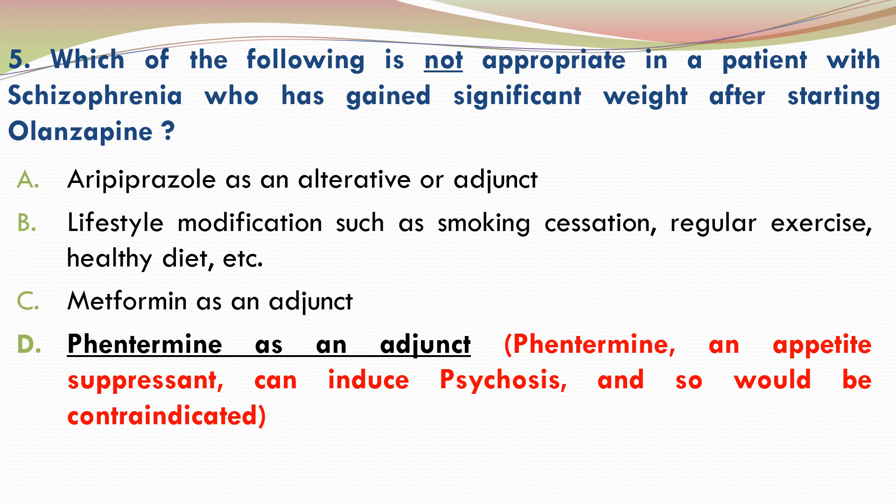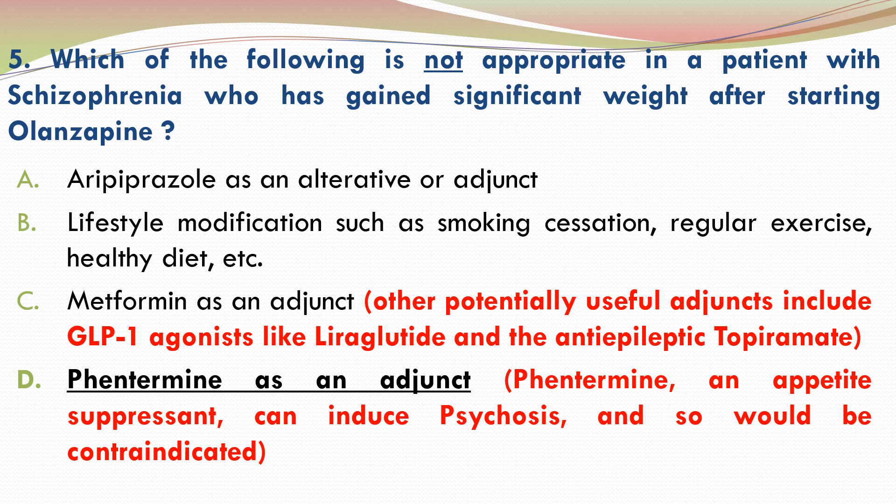The other three options are appropriate. Aripiprazole can be used either as an alternative or as an adjunct to olanzapine. Lifestyle modification advice should be implemented in any patient, especially those taking medicines that can cause significant weight gain. Metformin as an adjunct is appropriate even if the patient does not have diabetes. Other potentially useful adjuncts include the glucagon-like peptide-1 receptor agonist liraglutide and the antiepileptic topiramate.